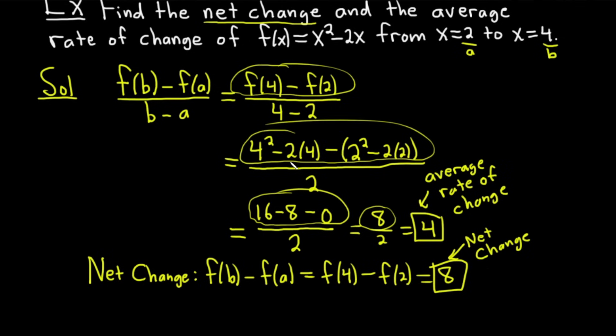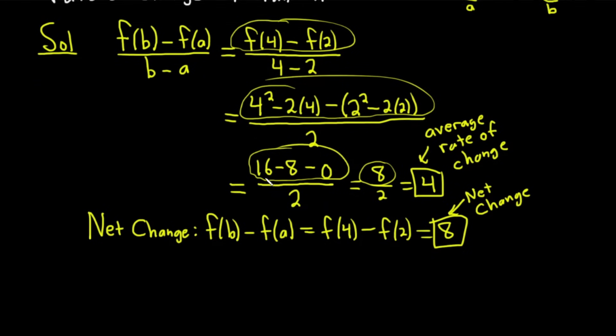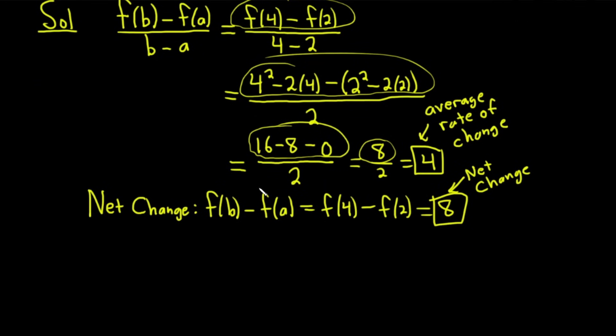So the average rate of change is just the net change over the change in x. You can think of it as time. You know the idea behind this, one idea. There's many ideas. One concept behind this if you're curious just for fun.